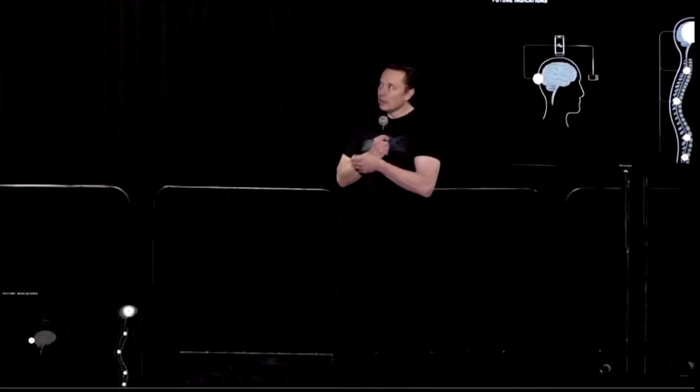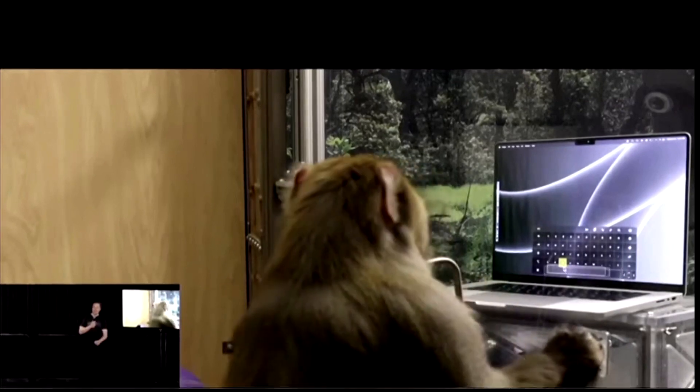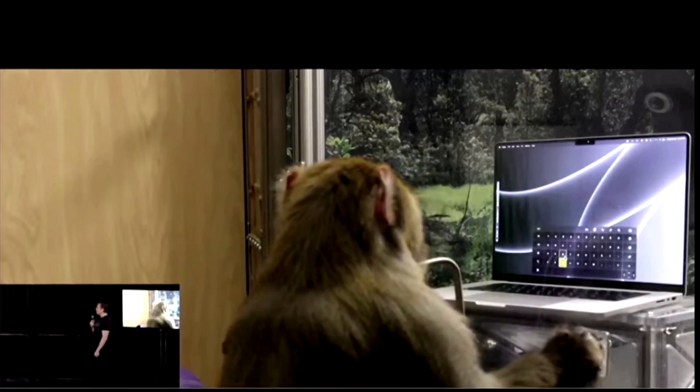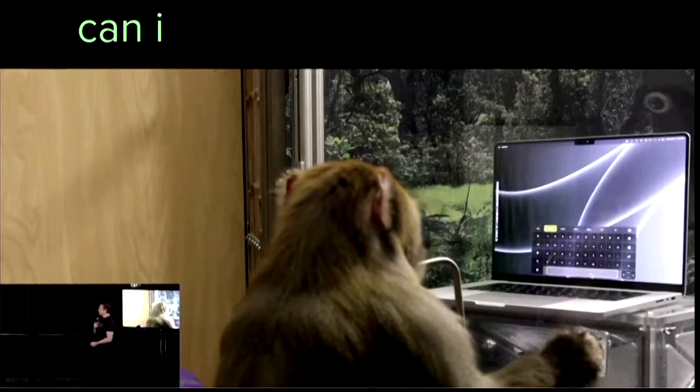At Elon Musk's much-awaited show-and-tell event for his brain implant company Neuralink, the world's richest person shared video of a monkey typing telepathically as he seeks to begin clinical trials for a wireless brain chip in human beings.